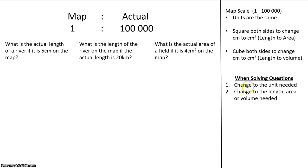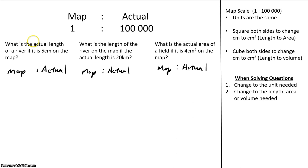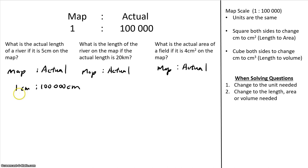When solving questions, you generally want to change to the unit you need first, then change the length to what you need. For example, looking at this question: the actual length of a river is asked given that it is 5 cm on the map. We start with the scale: 1 cm to 100,000 cm.